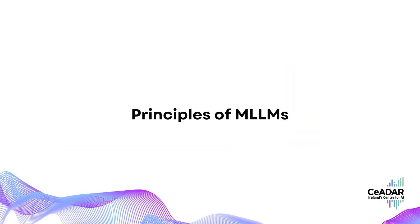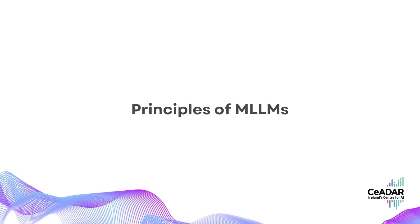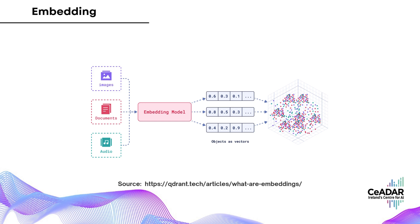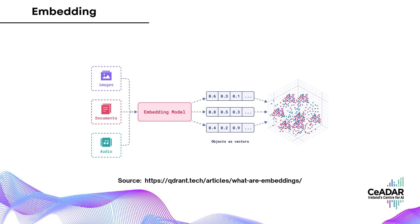Now let's dive a bit deeper into how these multimodal models actually work. Understanding their inner workings can be really fascinating because, at the core, it all comes down to something called embeddings. So what exactly are embeddings? Simply put, they're ways to represent information, whether it's text or images, as vectors in a high-dimensional space. It's like converting everything into a series of numbers that models can easily process.